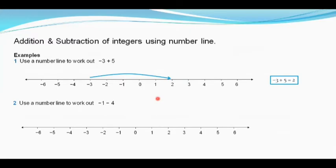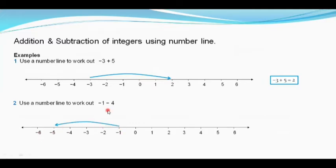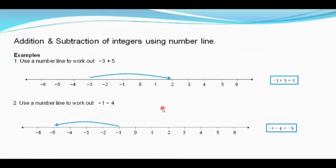One more question: minus 1 minus 4. Since we are adding a negative integer, we have to move four places to the left from minus 1. Moving four places to the left, we reach minus 5. So minus 1 minus 4 gives us minus 5.